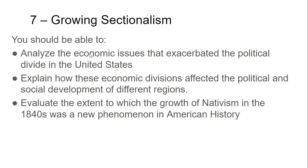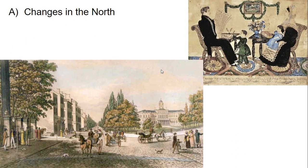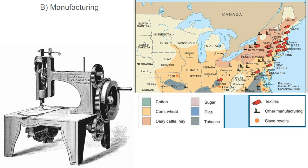In the North, we're continuing to see the growth of cities, the growth of the middle class and upper class. We're starting to see the rise of industrialists and the first robber barons, all growing in power and influence in northern cities. We're also seeing technological growth leading to a spectacular explosion of manufacturing. The invention of the Singer sewing machine is going to significantly increase the amount of cloth and clothing that can be produced, improving quality and increasing profitability.